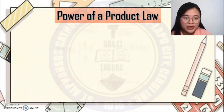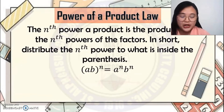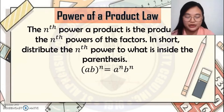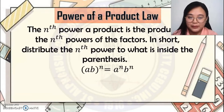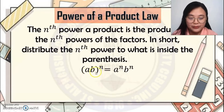Power of a Product Law. The nth power of a product is the product of the nth powers of the factors. In short, distribute the nth power to what is inside the parenthesis. For example, (ab) raised to n — distribute the exponent n to a and b inside the parenthesis — giving a to the n times b to the n.